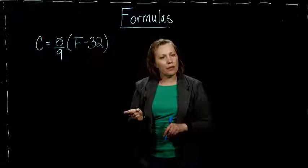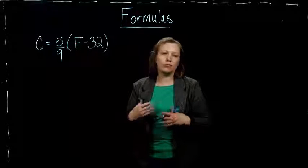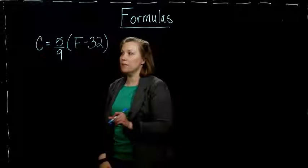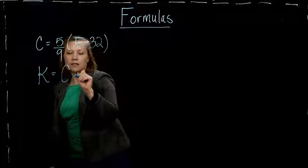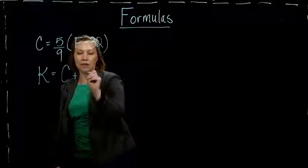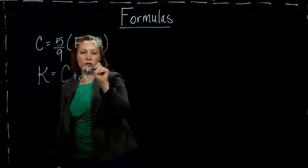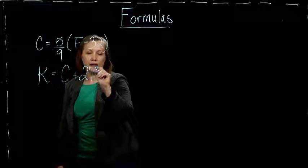But there's another way to measure, or way that temperature is measured called Kelvins. And so to get the Kelvins, if we have the Celsius temperature, we just take that temperature and add 273 to it, and that gives us the Kelvins.